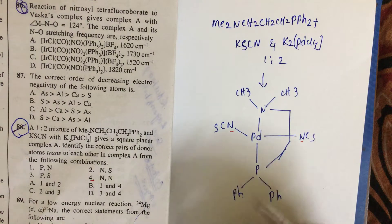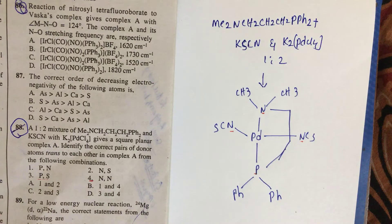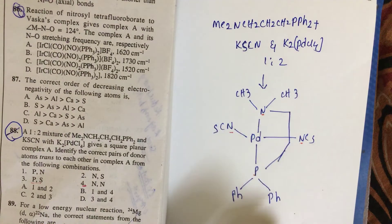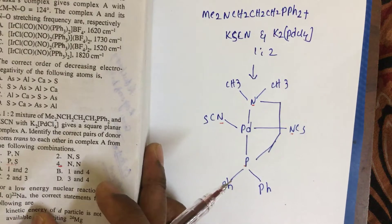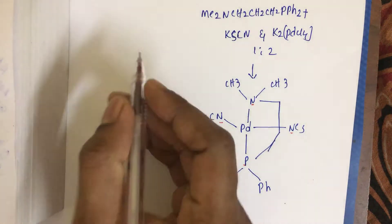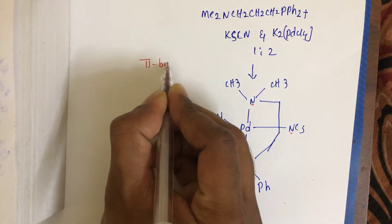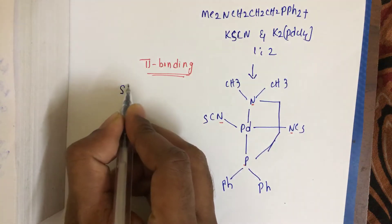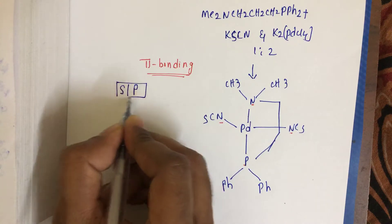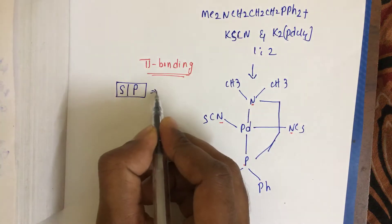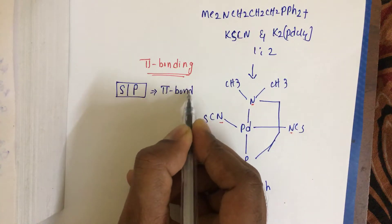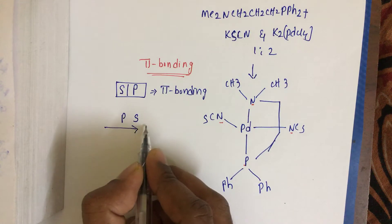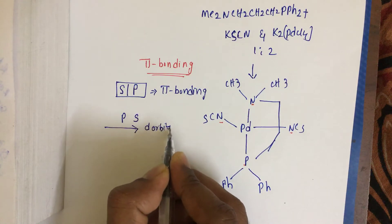We also see nitrogen and phosphorus as an option. But why NCS and not SCN? There is one concept of pi back-bonding capacity that is essential to answer this question. Both sulfur and phosphorus can form pi bonds. Looking at the periodic table, phosphorus and sulfur positions matter — as we move across, the d orbital size decreases.